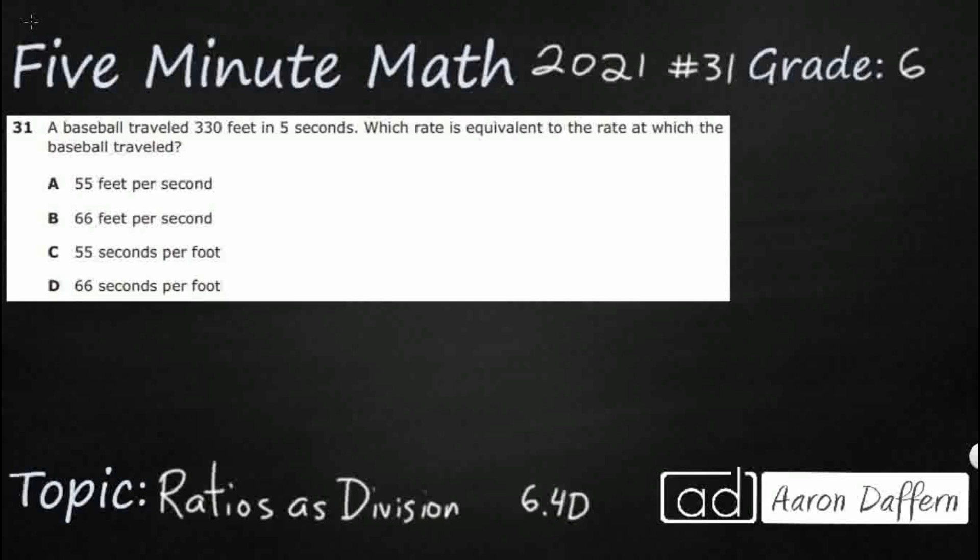So we have a baseball that travels 330 feet, and it does that in 5 seconds. We need to find a rate that is equivalent to the rate at which the baseball travel, and you notice that each of these rates have a per, which means if we wanted to rewrite this rather than words, we can say 55 feet per second. We kind of use that as a fractional notation. That division bar, that slash, lets you know that that's a per. Same thing we could do, 66 feet per second. And we've got the same numbers down below in C and D. What they simply do is they switch the numerator and the denominator, seconds per foot, and then 66 seconds per foot. So we can start looking at that as fractional notation.